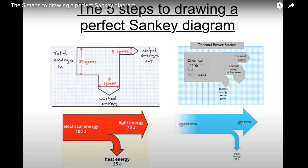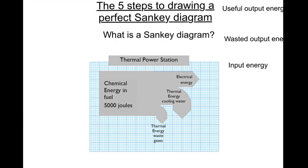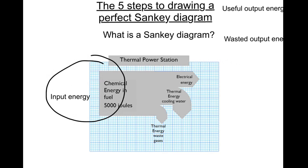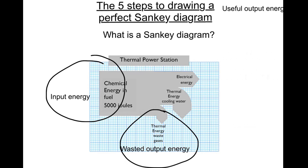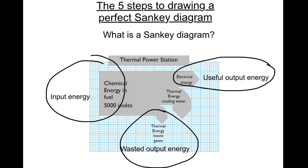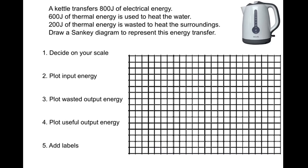In this short video, we'll go through the five steps to drawing the perfect Sankey diagram. A Sankey diagram has three main components: the input energy on the left, the wasted energy outputs as arrows pointing downwards, and the useful energy outputs as arrows pointing to the right. For example, a kettle transfers 800 joules of electrical energy — 600 joules of thermal energy is used to heat the water, and 200 joules of thermal energy is wasted to the surroundings.